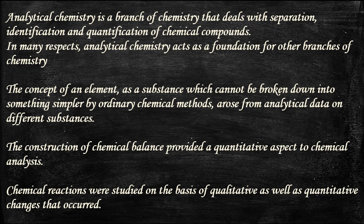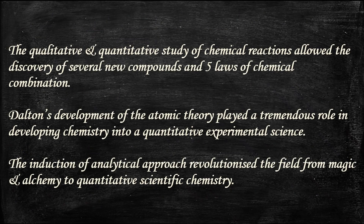The concept of an element as a substance which cannot be broken down into something simpler by ordinary chemical methods arose from analytical data on different substances. The construction of the chemical balance provided a quantitative aspect to chemical analysis. Chemical reactions were studied on the basis of qualitative as well as quantitative changes. This allowed the discovery of several new compounds and five laws of chemical combination. Dalton's development of the atomic theory played a tremendous role in developing chemistry into a quantitative experimental science. The induction of the analytical approach revolutionized the field from magic and alchemy to quantitative scientific chemistry.